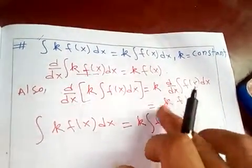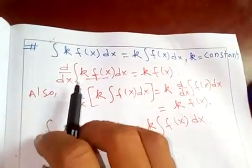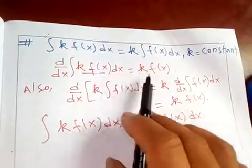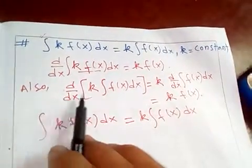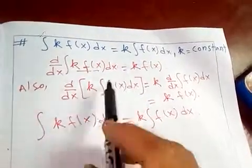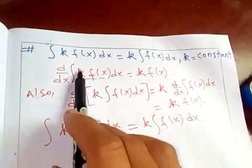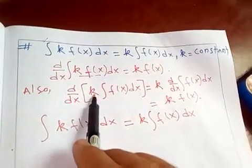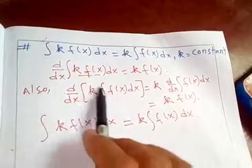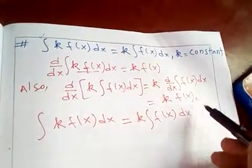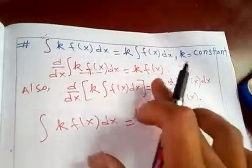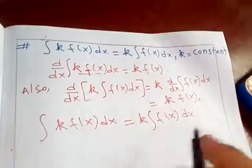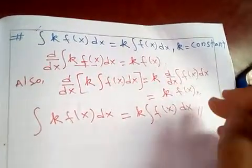Since taking the differentiation of the integral of k*f(x) gives k*f(x), and taking the differentiation of k times the integral of f(x) also gives k*f(x), the right-hand sides are equal. Therefore, the two left-hand sides must be equal, which completes our proof.